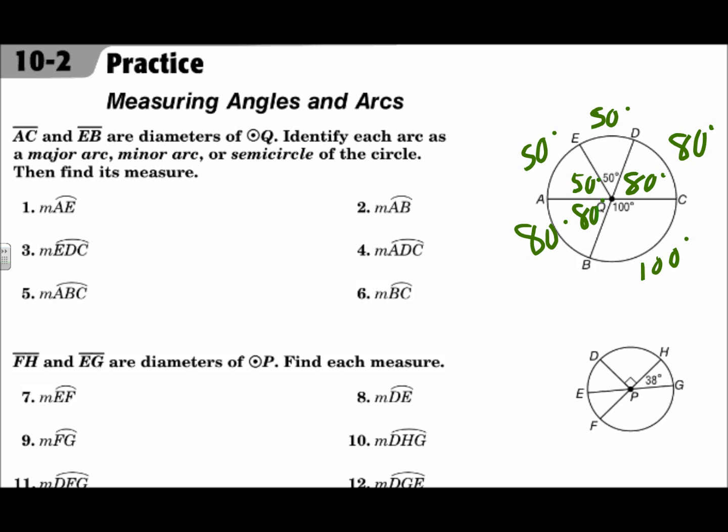Now, let's answer the questions. The measure of arc AE is what I'm looking for. Well, arc AE is the short way there, so it's a minor arc, and its measure we found is 50 degrees. The measure of arc AB is the short way there, it's less than halfway around the circle, so it's a minor arc, and we found its measure at 80 degrees.